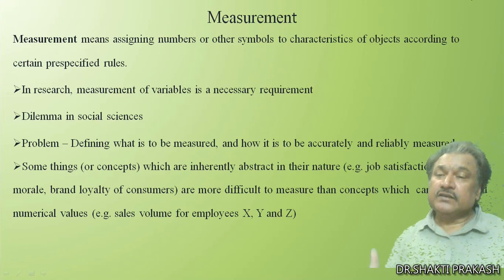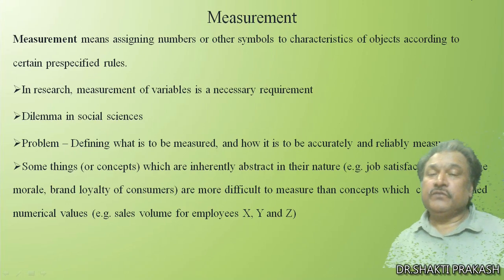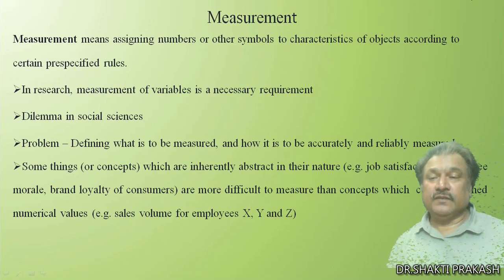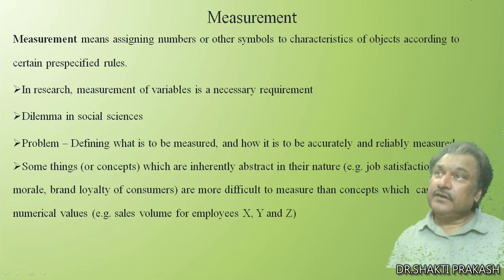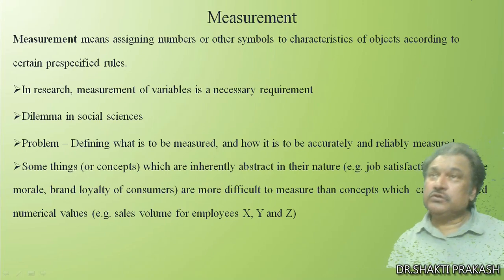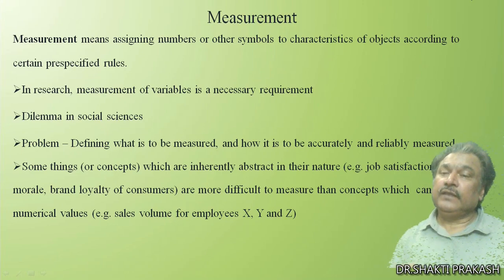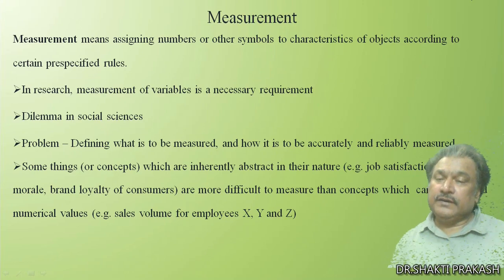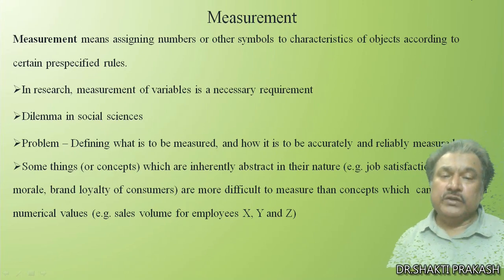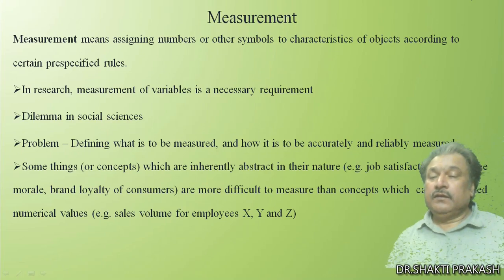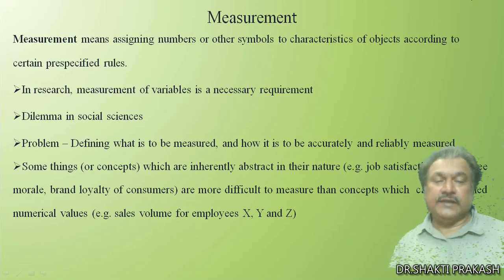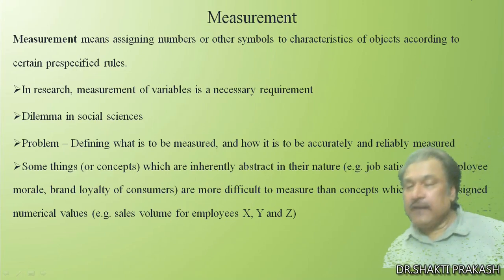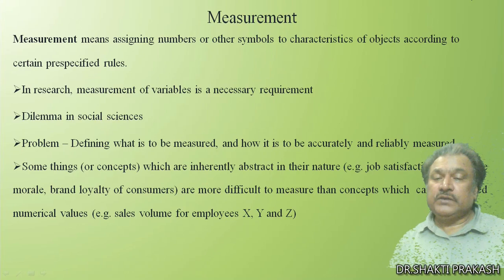We will discuss what the certain prescribed rules in research are. Measurement of variables is a necessary requirement. We should know about what variables we are going to study and what type of variables they are, and then we will use such types of scales. The dilemma in social science is: how to define what is to be measured and how it is to be accurately and reliably measured. Some things or concepts which are inherently abstract in nature — like job satisfaction, employee morale, and brand loyalty of consumers — are more difficult to measure than concepts which can be assigned numerical values.